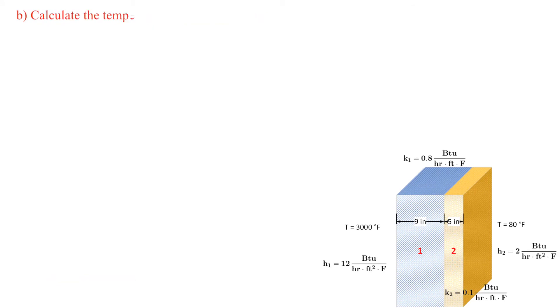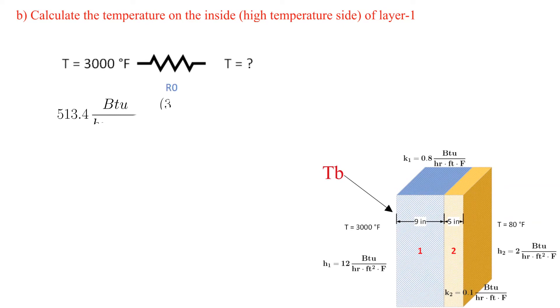In Part B, we find the temperature on the high temperature side of layer one. We denote this as temperature Bravo. The resistance network is shown and the only resistance is due to the convective heat transfer on the left side.